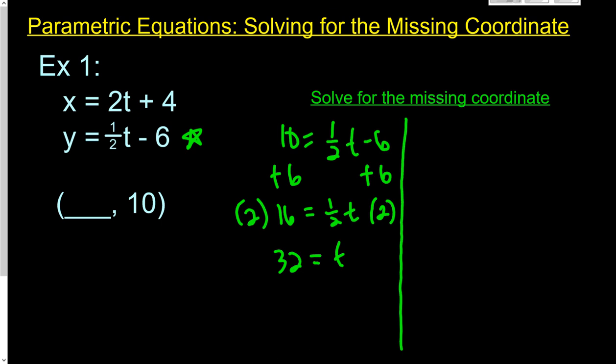So the next part is we know that t equals 32. So now what I'm going to do is go over to my x equation, plug it in, and figure out what x would be.